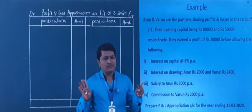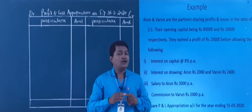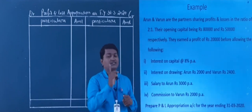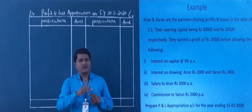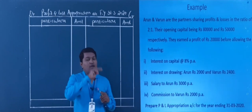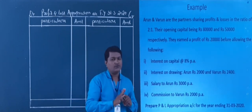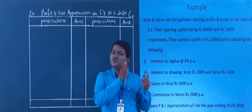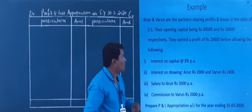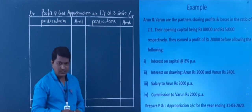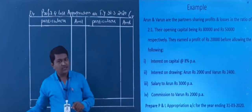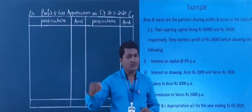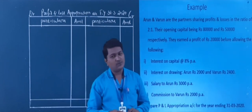The credit side always has profit and loss transferred — that is, net profit transferred — and also interest on drawings. These two things we always take at the credit side of the profit and loss appropriation account. On the debit side we have interest on capital, salary, commission, interest on partner's loan, and the difference is profit.